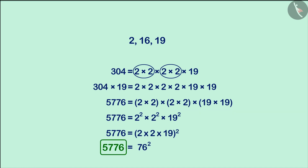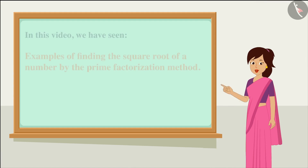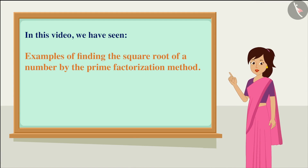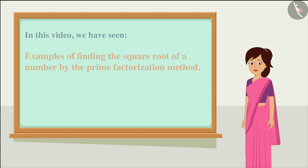Therefore, the number 5776 is the smallest perfect square which is divisible by 2, 16 and 19. We can also see that the square root of the number 5776 is 76. In this video, we have seen some examples of finding the square root using the prime factorization method. Hope you have understood this method very well. Thank you.